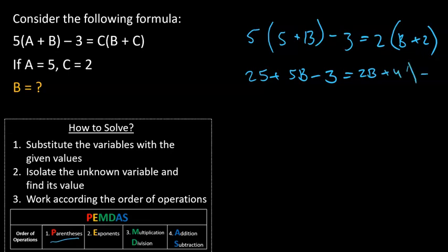Moving the B's to the left we get 5B minus 2B plus 25 minus 3 equals 4. That's 22 so we move it to the other direction.